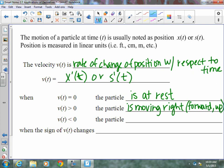When the particle is less than zero, when velocity is less than zero, the particle is moving left, sometimes backward or down. When the sign of v(t) changes, it's gone from positive to negative or negative to positive, meaning the particle changes direction.